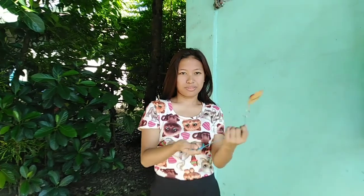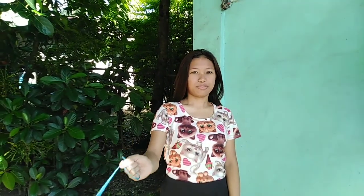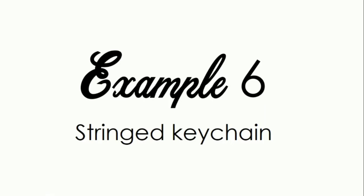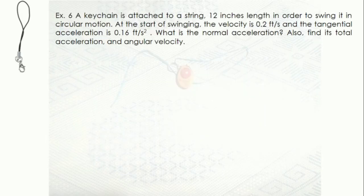The most common example illustrated in this topic is using a string, attaching it to objects — sometimes a key — to enable the object to rotate either vertically or horizontally. The last example is a string keychain.